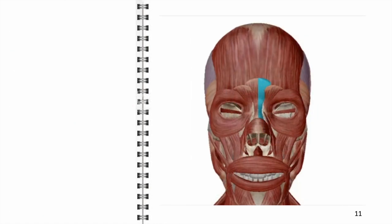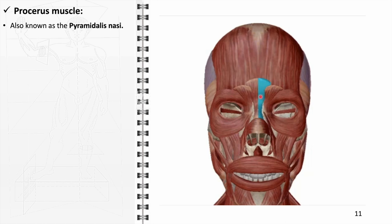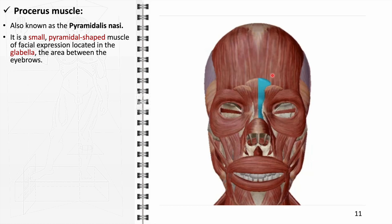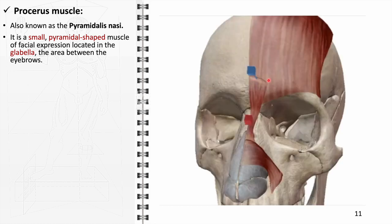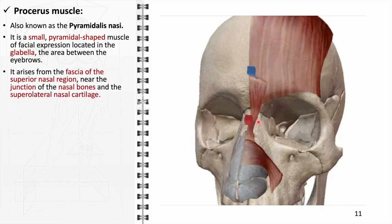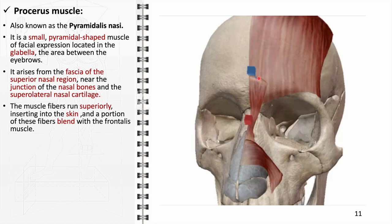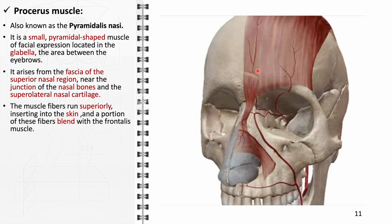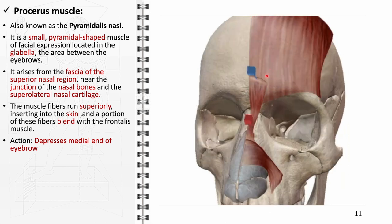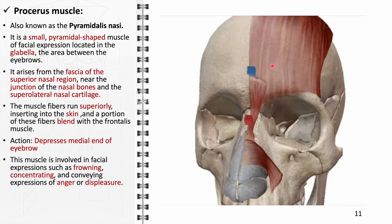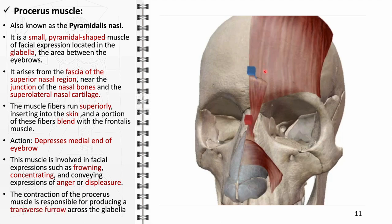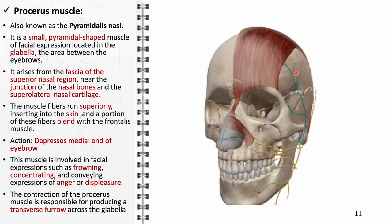The procerus muscle, also known as the pyramidalis nasi and a component of the nasal group, is a small, pyramidal-shaped muscle of facial expression located in the glabella, the area between the eyebrows. Arising from the fascia of the superior nasal region near the junction of the nasal bones and supralateral nasal cartilage, its fibers run superiorly to insert into the skin, blending partially with the frontalis muscle. Its primary action is to depress the medial end of the eyebrow, producing a transverse furrow across the glabella associated with frowning or anger. It is innervated by the facial nerve and receives blood supply from the facial artery.